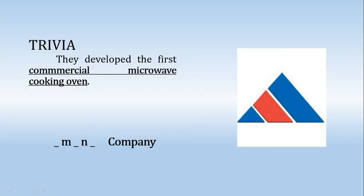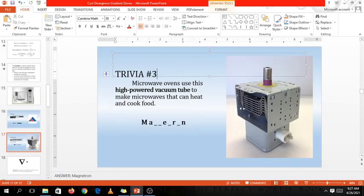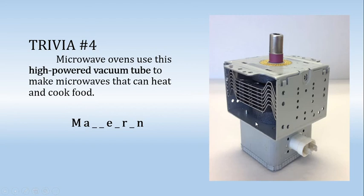Trivia number 3: They developed the first commercial microwave cooking oven. What is the name of this company? Trivia number 4: To make microwaves that can hit and cook food, what is the name of this high-power vacuum tube?